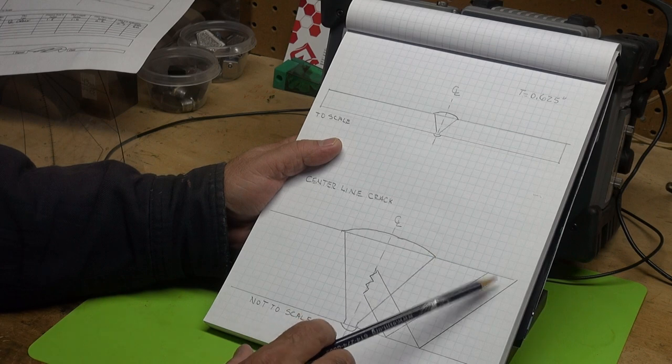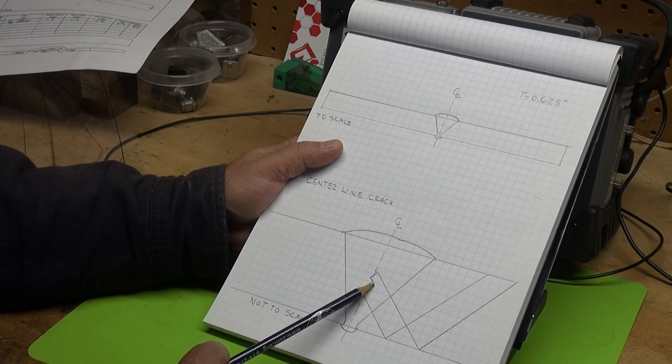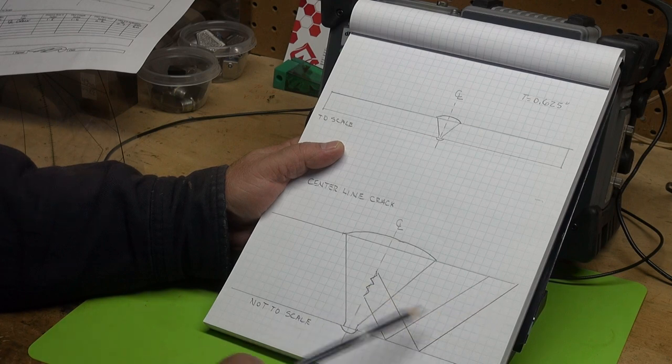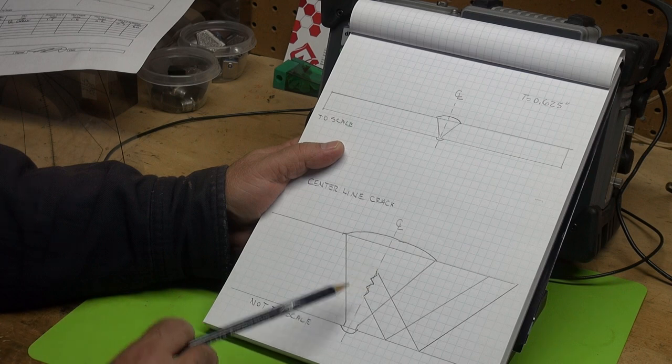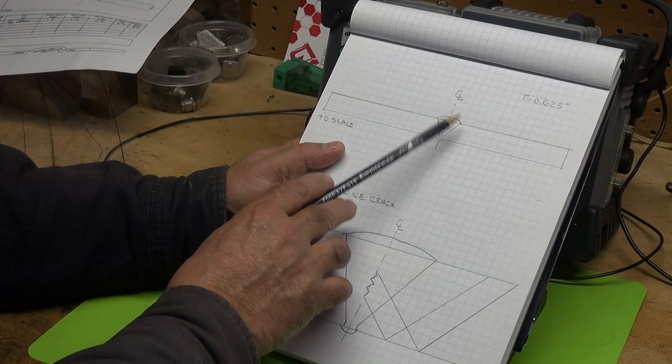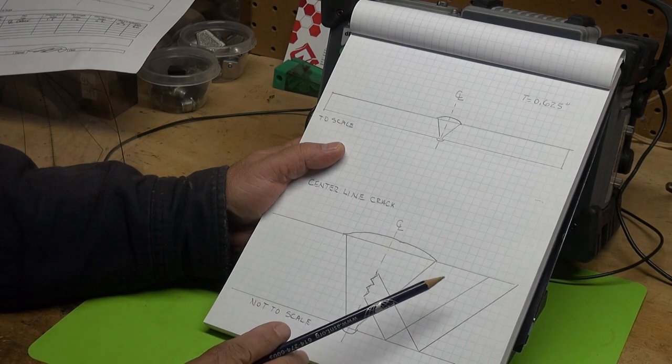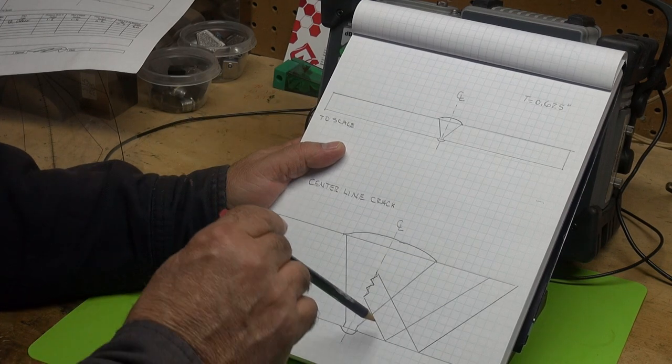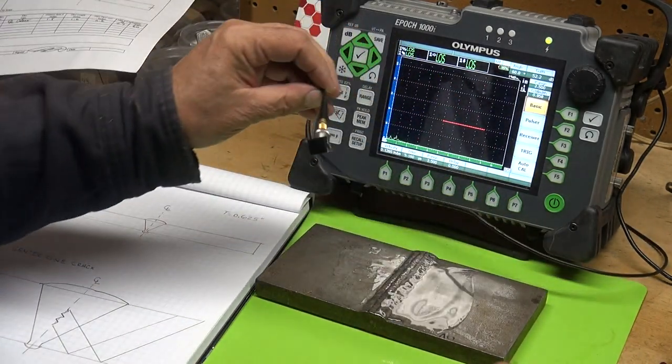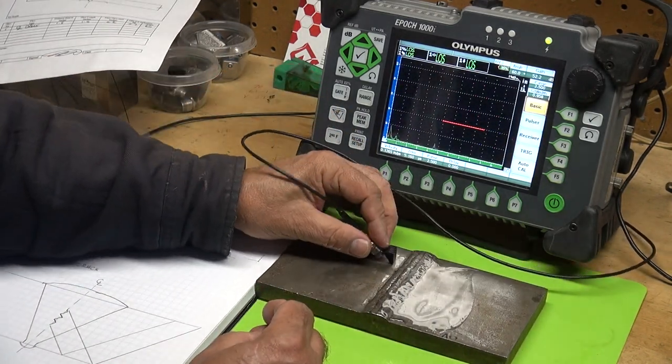This weld does have a centerline crack in it and I'm going to use the 6 dB drop method to size through wall, size this crack. I'll get this signal at 50% or 80% full screen height and then move the transducer in or out to catch the tips. When the signal drops to half the value or 6 dB, that's the point that I'll mark as the end of the crack. I'm going to show you how to do the 6 dB drop using a 60 degree transducer and wedge. My transducer is a 5 megahertz quarter inch diameter. The 5 megahertz is very good for resolution.